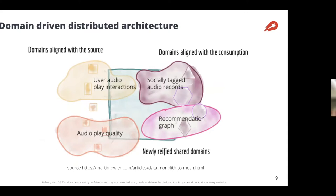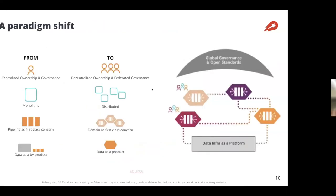This is how the data mesh tries to solve that problem — by moving from a centralized view to having teams structured around a defined domain. You might have a team for user-audio-play interaction, a team for audio quality, a team for recommendation and graphs. Importantly, they all work within a shared data infrastructure with the same tooling and specs. Just like microservices use TCP/IP as an integration protocol, the data mesh has shared protocols to define how data can be shared and used.